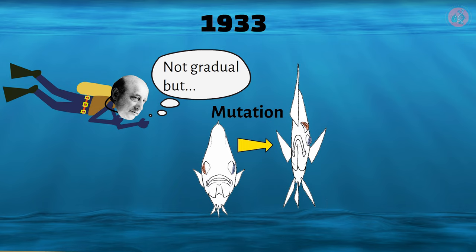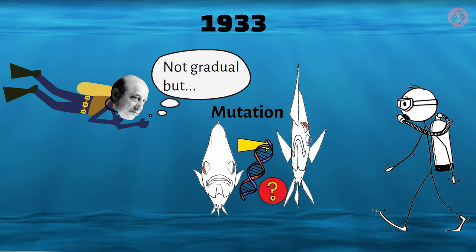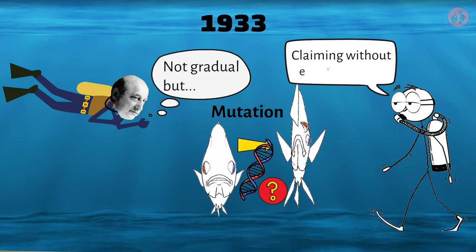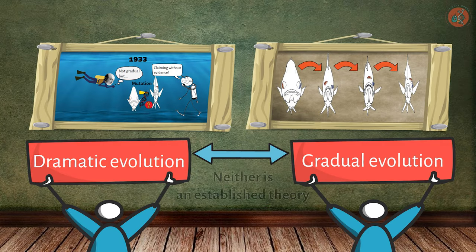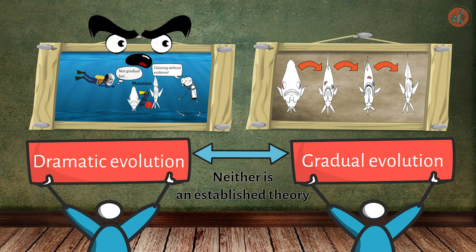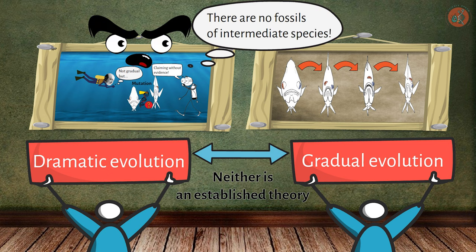However, as he didn't identify any specific genes responsible for this change, his theory was not widely accepted as definitive. This still did not establish the theory of gradual evolution as the prevailing one, because no intermediate fossil species showing the transition from symmetric to asymmetric eyes was discovered.